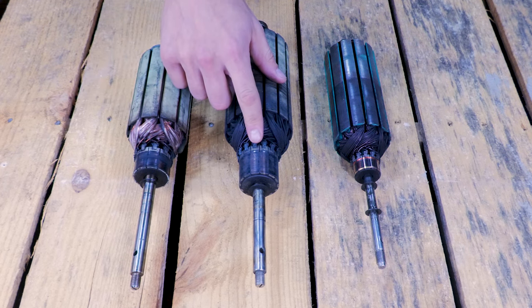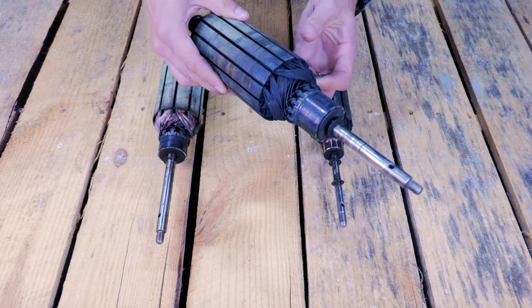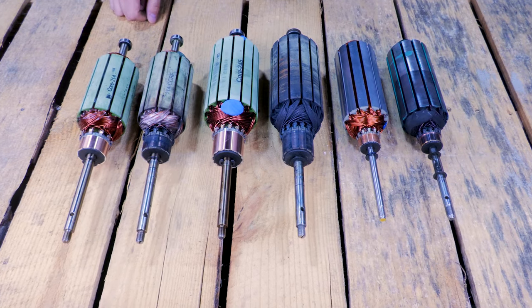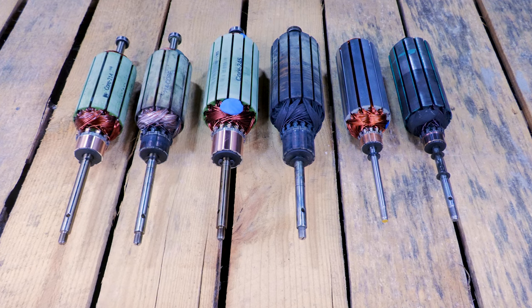So these are a couple of used trolling motor armatures. You can see here on these commutators, there's quite a bit of buildup. So for comparison, I have a couple of new armatures here so that you can see the difference.